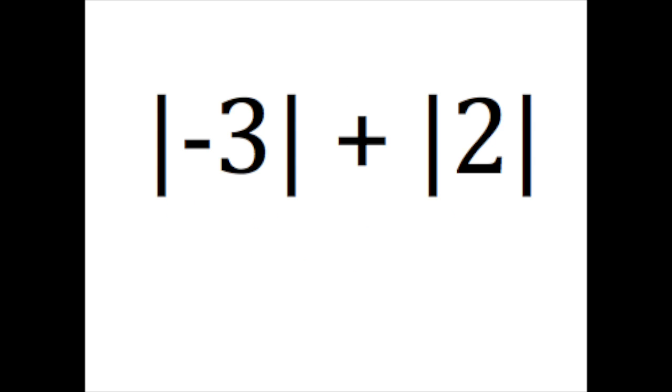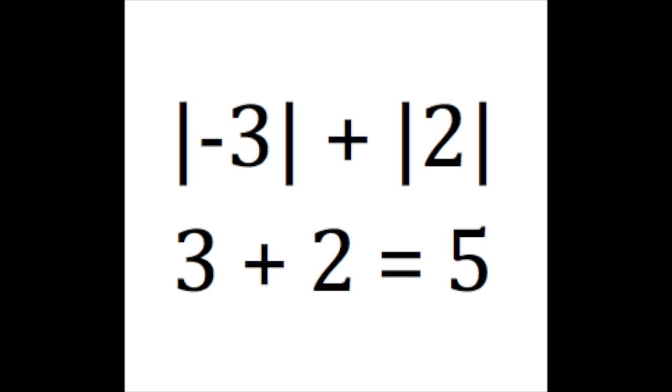In this case, we have the absolute value of individual numbers that we add together. So, we take the absolute value of negative three, which is three. And we add it to the absolute value of two, which is two. And that equals five.